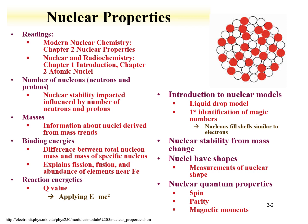We're going to talk about nuclear models, just a brief introduction. We'll start with the simplest, the liquid drop model, show how it was derived, and how it led to the identification of what are called magic numbers for nuclei. We're going to find out that nucleons fill shells similar to electrons. As a chemist, you understand that when an electron shell gets filled, chemical properties of that element are different. We're going to see that as nuclear shells get filled, the nuclear properties of those isotopes are also different.